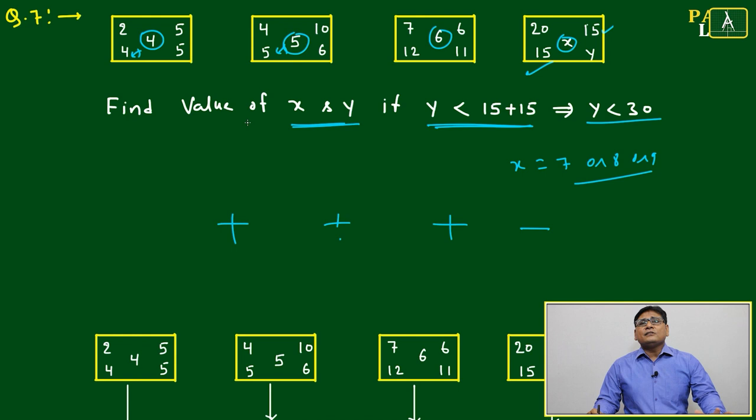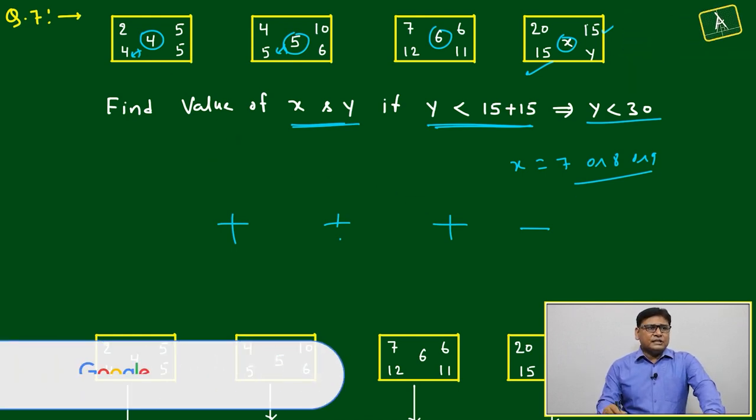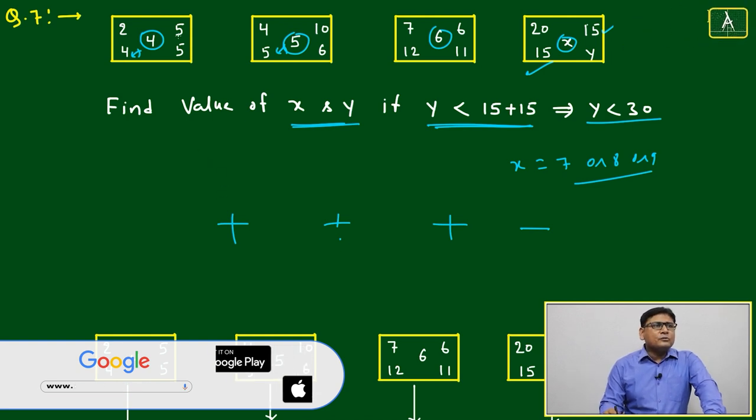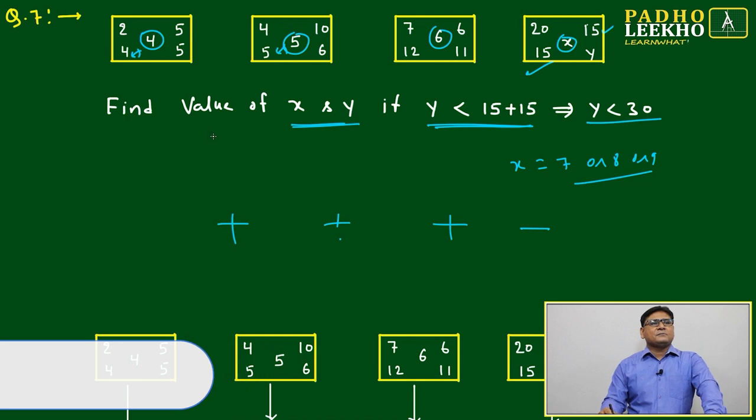Let's try to think: if we are adding, are we getting any clue? 2 plus 4 is 6, 6 plus 5 plus 5 is 16.